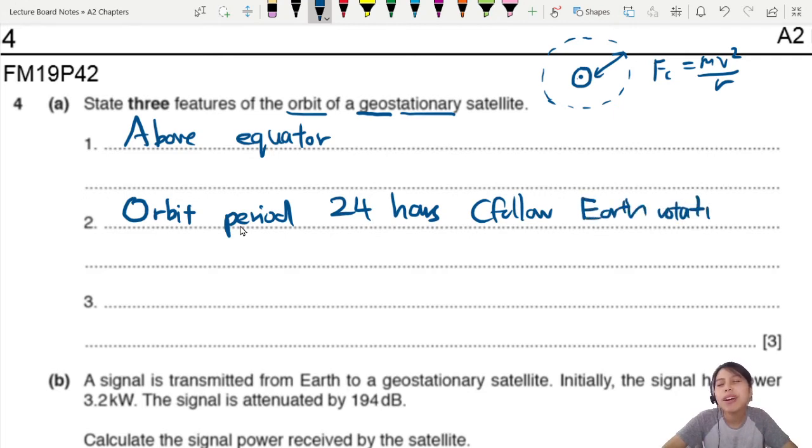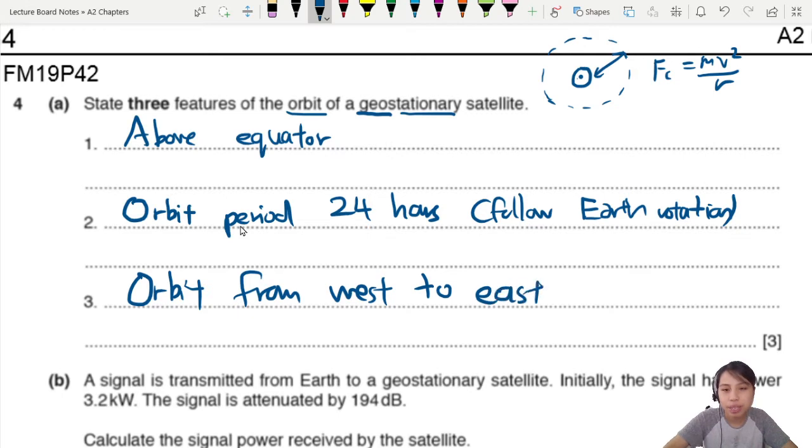What other features do we have? Direction. If your Earth is turning a certain way, your satellite must also orbit in that same direction. So we can say that the orbit must be from west to east. Go back to the animation if you want to stare at it again. Earth turned west to east, so we also orbit west to east. If you get any three correct, that's just three marks straight away for you if you memorize the facts of what is a geostationary orbit.